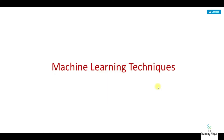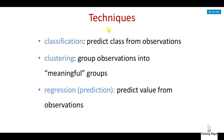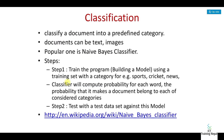Machine learning techniques are classification, clustering, and regression. Classification assigns a class from observation. Clustering groups items into meaningful groups. Regression predicts a value from observation. Classification finds the class and clustering finds the group.